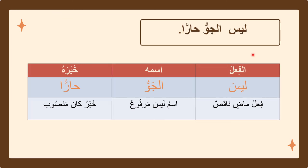Here is another example: لَيْسَ الجوُّ حَارًا. The word لَيْسَ is past tense, فِعْلٌ مَاضٍ نَاقِصٌ. The next word is الجوُّ — إسمُ لَيْسَ مَرْفُوعٌ; مَرْفُوع is another word for ضَمَّة. The last part is حَارًا — خَبَرُ لَيْسَ مَنْصُوب; مَنْصُوب means another word for فَتْحَة.